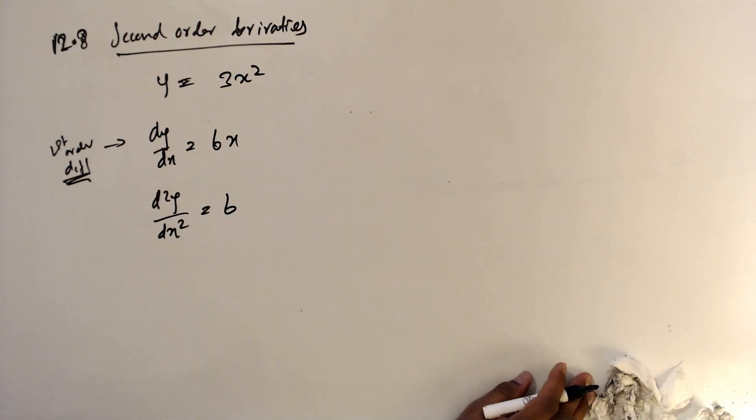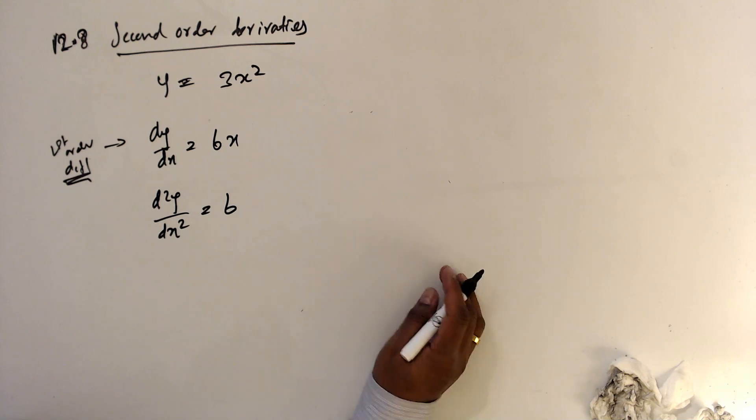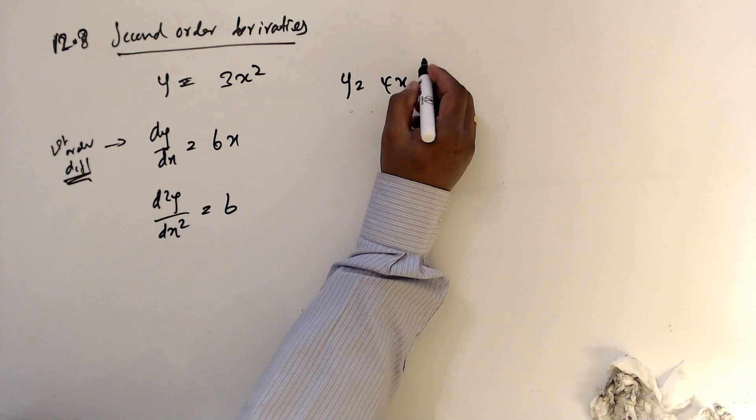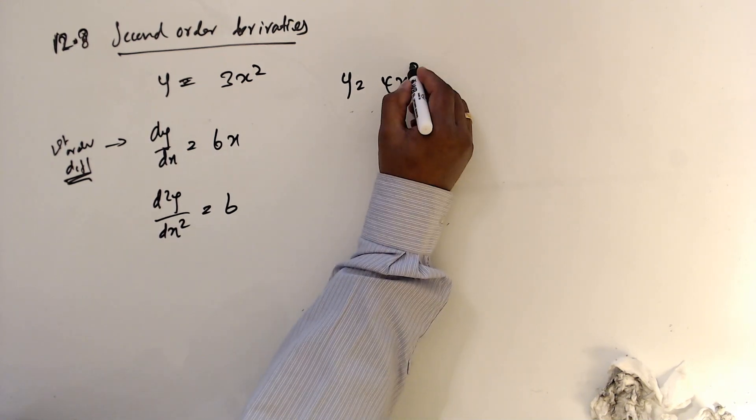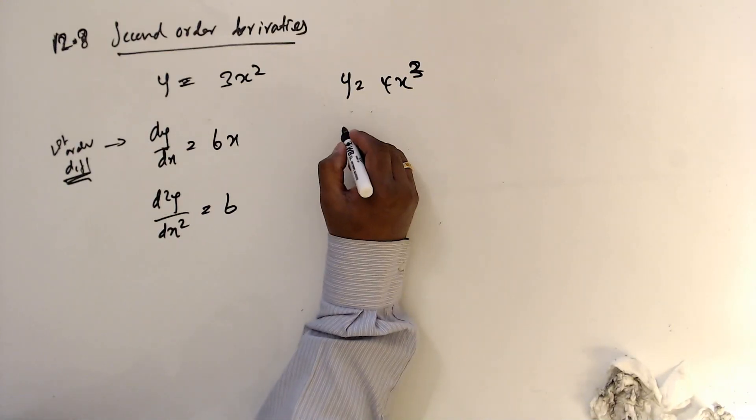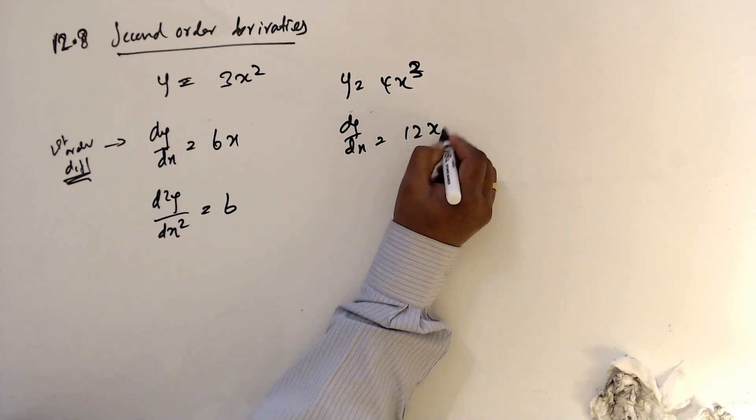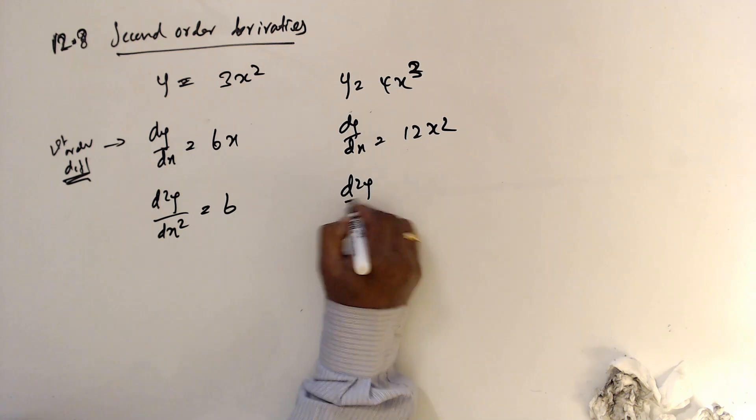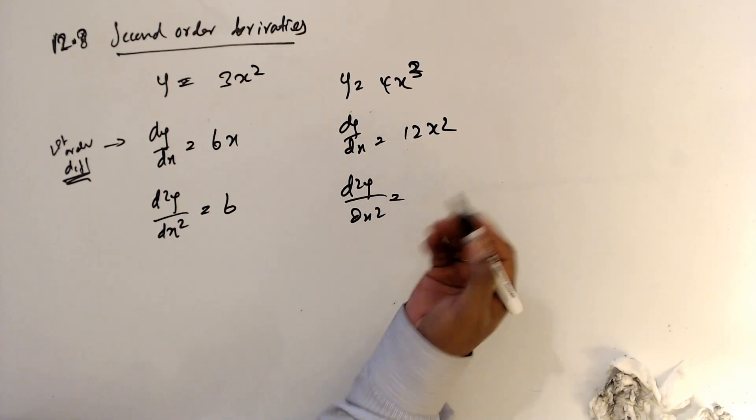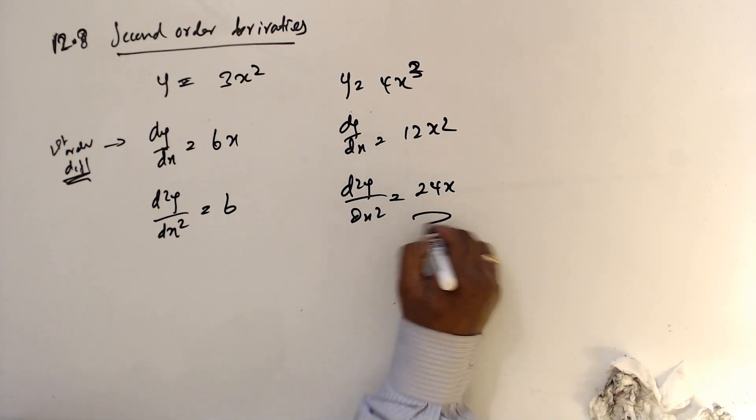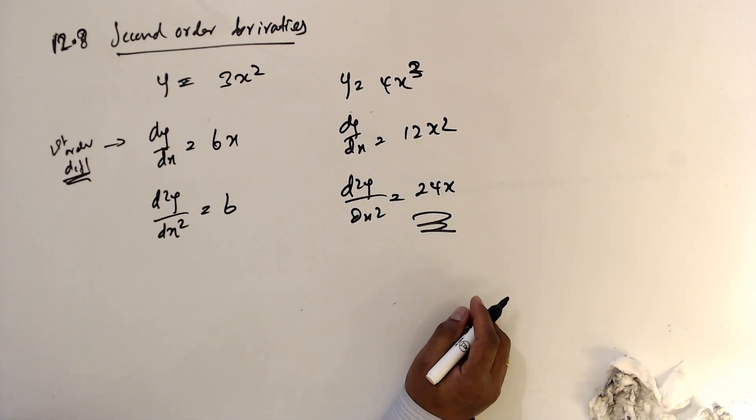We will discuss another one. y equals 4x squared times x cubed. Then dy over dx is 12x squared. d squared over dx squared, differentiate one more time, this is going to be 24x. That's all. Second order differentiation.